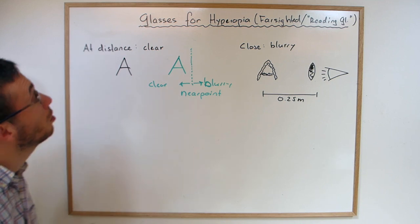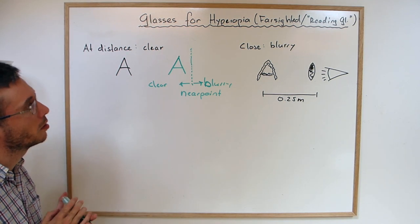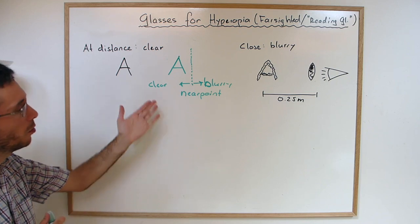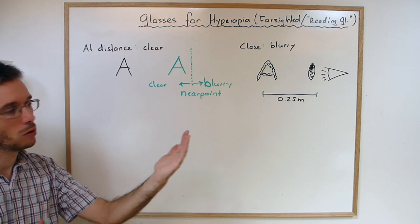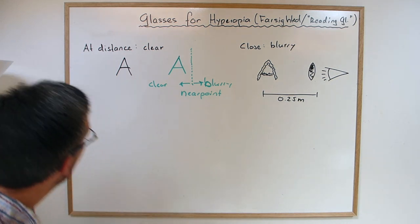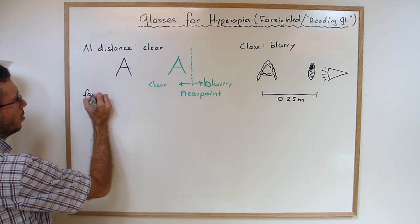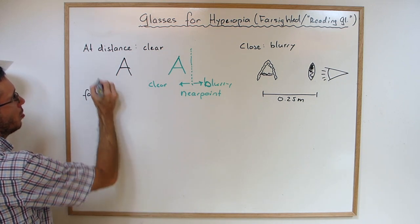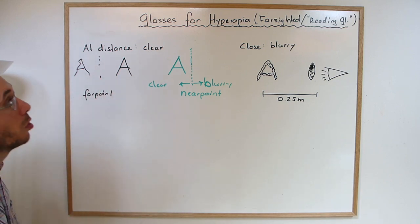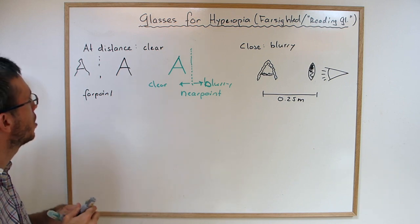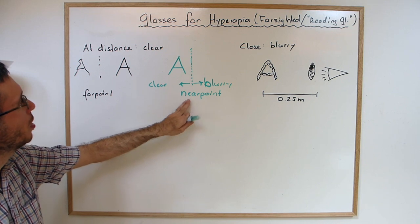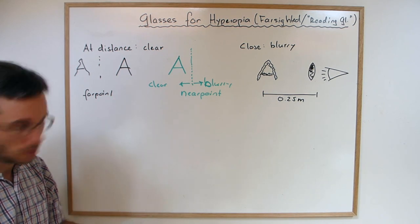So when you want to calculate the glasses or the diopters of reading glasses for somebody with hyperopia, you have to ask them how far away do you have to hold the text until it becomes clear? Pay attention that there is often also a far point where it can get blurry again. It can be that somebody has hyperopia and myopia at the same time. If somebody has only the near point issue here, it's actually quite easy.